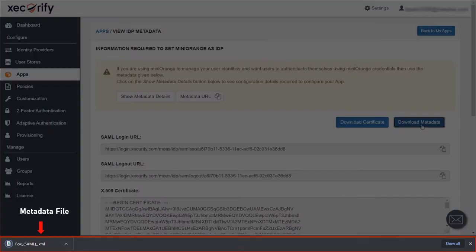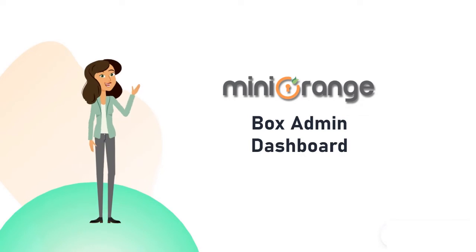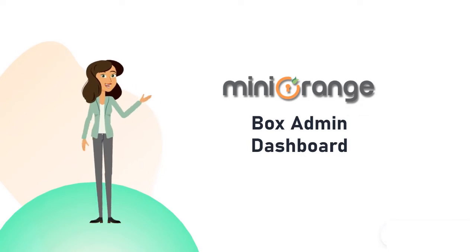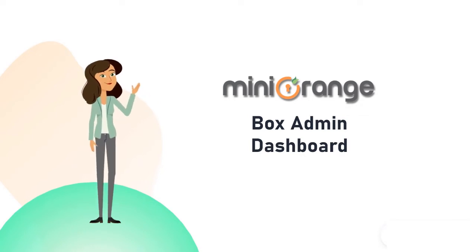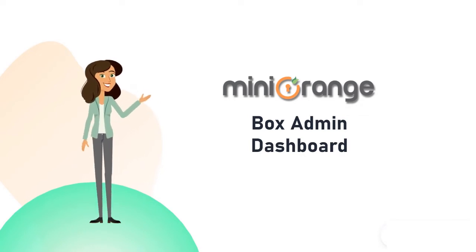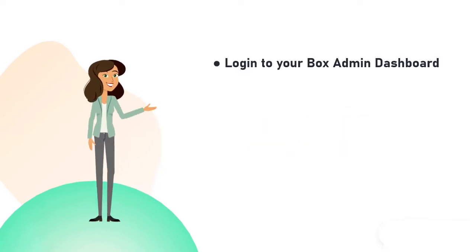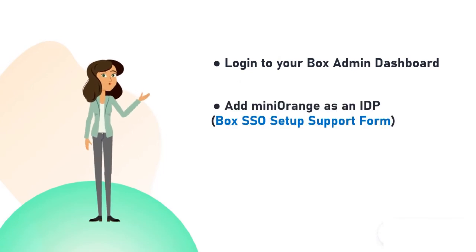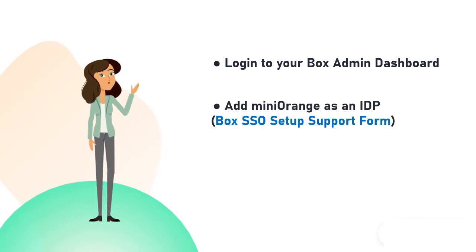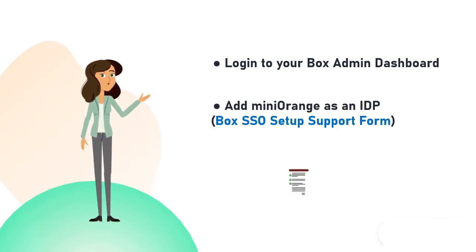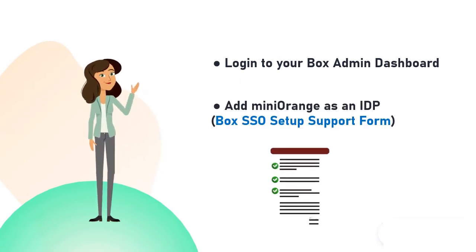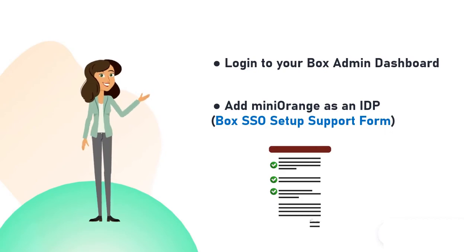This metadata file will be needed to set up the SSO in the Box application. Now let's switch to the Box admin dashboard and set up the SSO. First log in to your Box admin dashboard, then add MiniOrange as an IDP by filling in the Box SSO Setup Support Form.